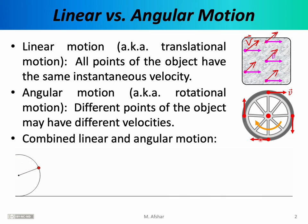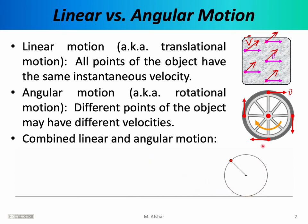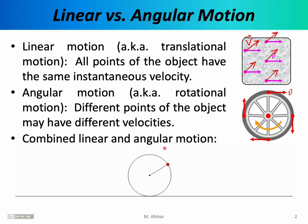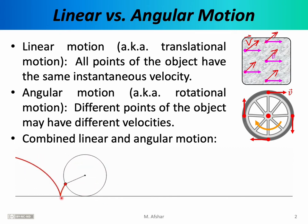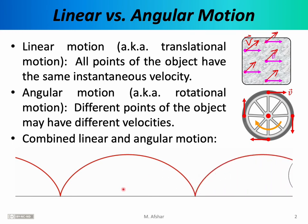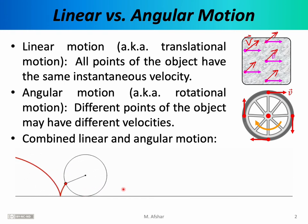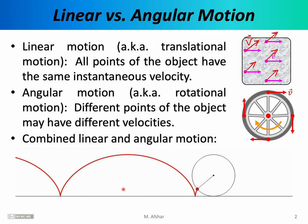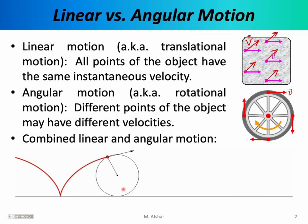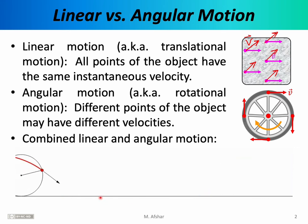We can also combine these two types of motion — linear and angular motion — which is what you would get if this wheel were the wheel of a bicycle rolling along on a flat surface, as shown in this animation. The motion of the center of the wheel is quite simple; it moves along a perfectly straight line. But if we trace out the motion of a point on the rim of the wheel, we see that the motion is quite complicated. This type of motion is referred to as a cycloid. The velocity vector is always tangent to the path being followed, tangent to the cycloid.